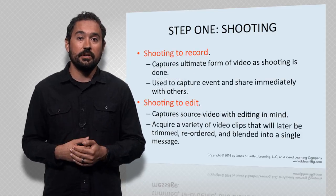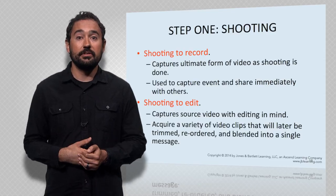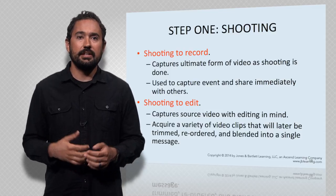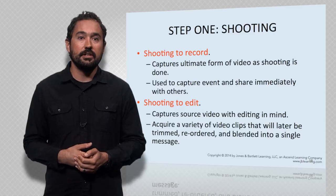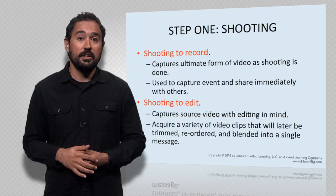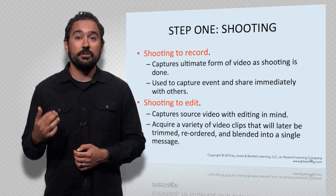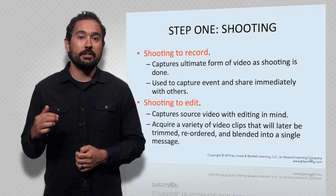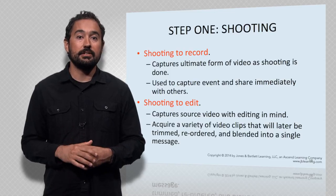There are two approaches to shooting video. Shooting to record is where you capture a video such as an event that is shared out immediately. This type of shooting attempts to capture the ultimate form of the video as the shooting is done — you see this in live TV or streaming events and concerts. Shooting to edit is where you follow a pre-planned script, shoot many video clips, and then work with them in the editor to blend them and create a single message.